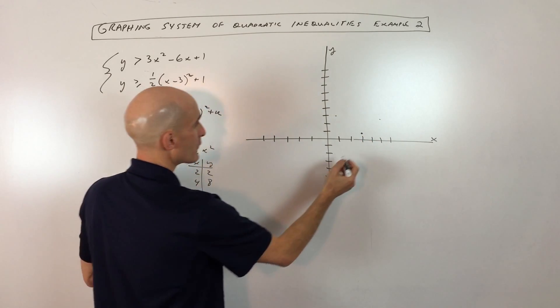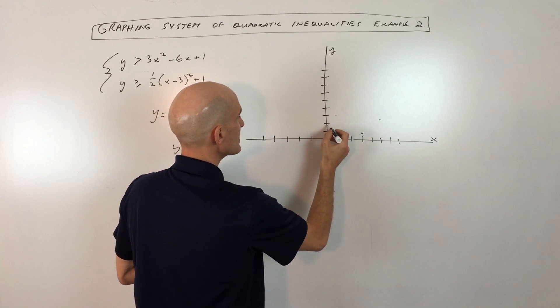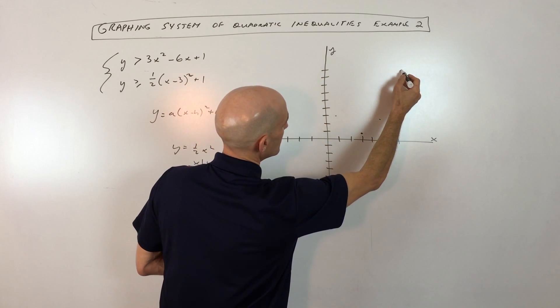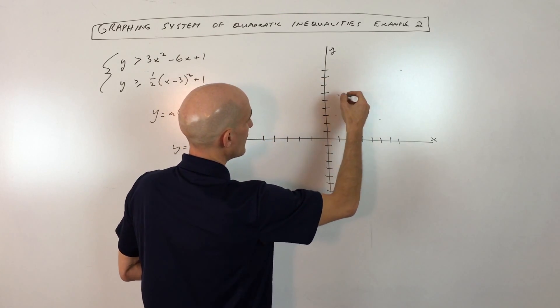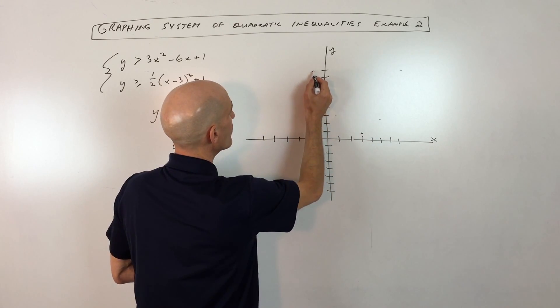And I could also go right 4, up 8. Let's see, 1, 2, 3, 4, up 8. Let's see, that's going to be 1, 2, 3, 4, 5, 6, 7, 8. Just right about there.